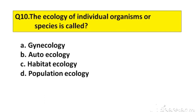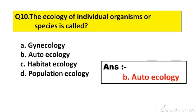Question number 10. The ecology of individual organism or species is called. Option A: Kynecology. B: Autoecology. C: Habitat ecology. D: Population ecology. The right answer is option B, Autoecology.